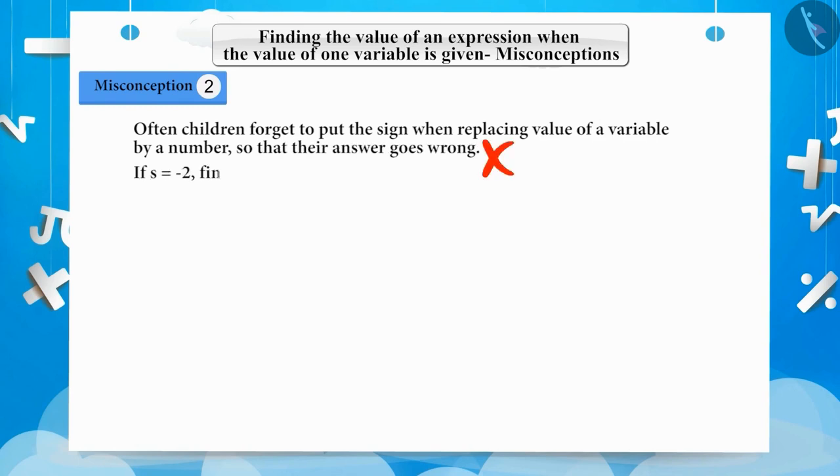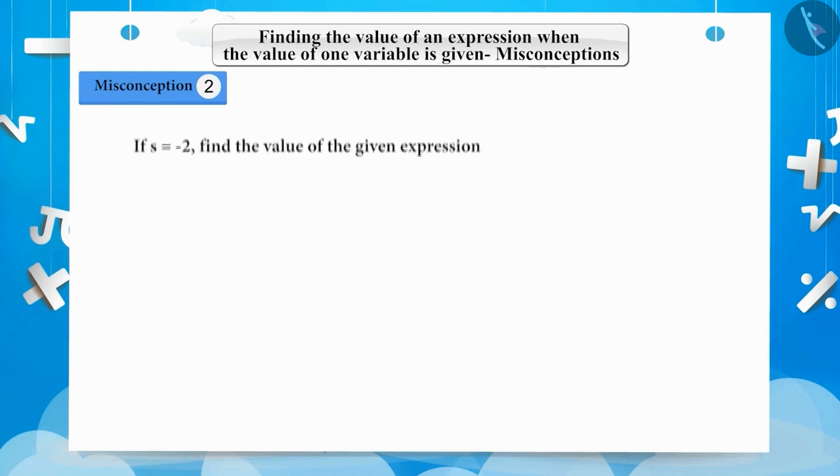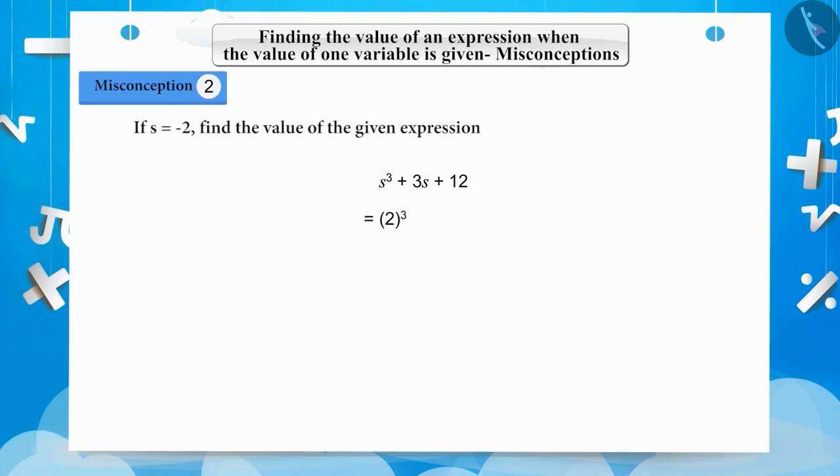If s is equal to minus 2, find the value of the given expression s cube plus 3s plus 12. Children solve it like this: 2 cube plus 3 multiplied by 2 plus 12 is equal to 8 plus 6 plus 12 is equal to 14 plus 12 is equal to 26. The answer we get is 26 and it's incorrect.